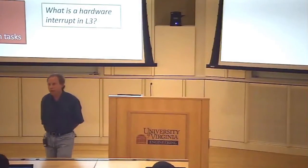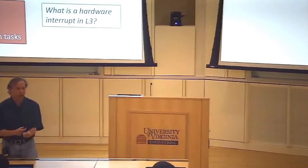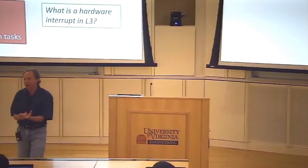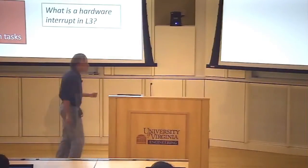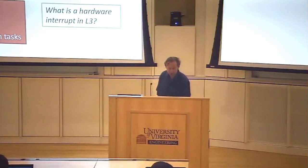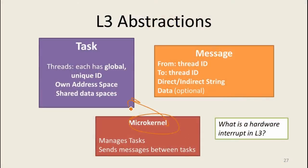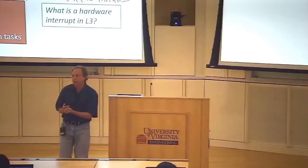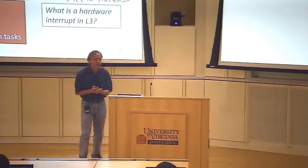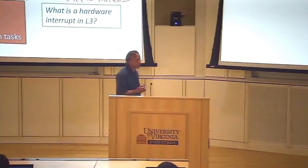We still need to deal with hardware interrupts — for example, if it's controlling the radio on your phone and something comes in, it needs to get to the right place. What does a hardware interrupt look like in L3? It's just a message from the kernel to a task, to some thread ID, and that thread is supposed to know how to handle it. That's part of keeping the design simple: a small number of minimal abstractions.